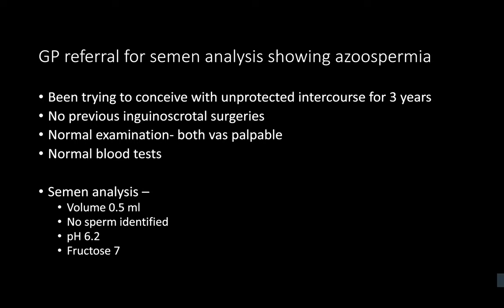This semen analysis demonstrates low volume, acidic semen with low fructose — suggestive of obstructive azoospermia with an obstruction distal to the ejaculatory duct. The seminal vesicles account for the majority of seminal fluid, contributing approximately 70 percent which is fructose-rich. Here the volume is small, fructose-deficient and acidic, suggesting the majority of the fluid is prostatic fluid.